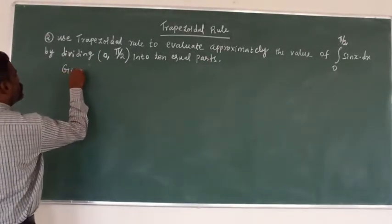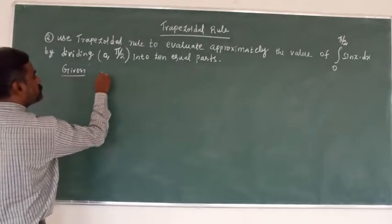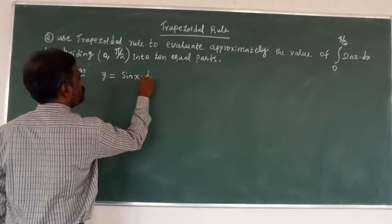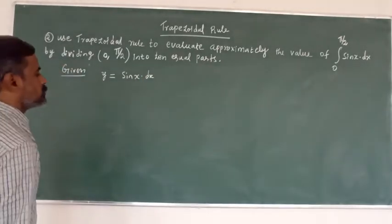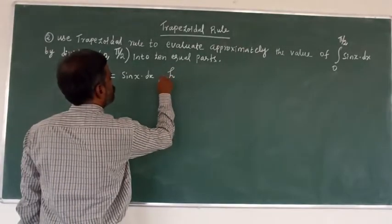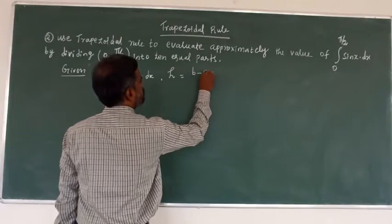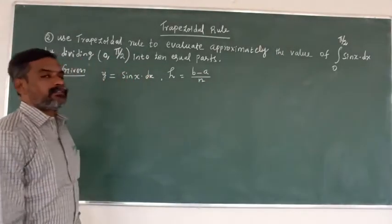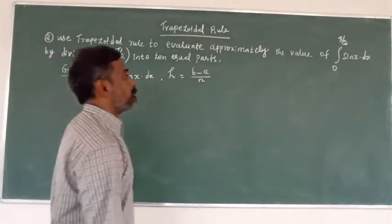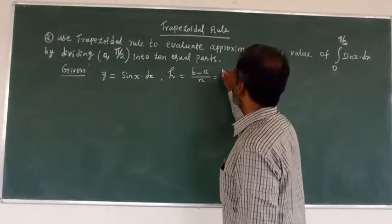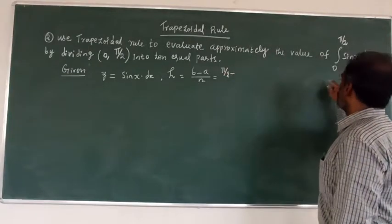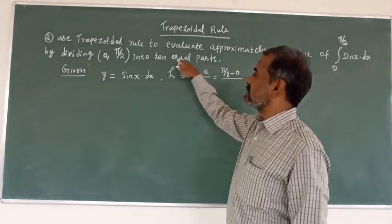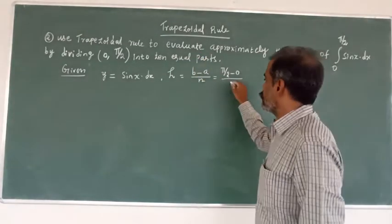We are given y equal to sin(x) dx. First, we have to find out the h value. h is equal to the upper limit minus the lower limit, divided by the number of intervals. Here, the upper limit is π/2, lower limit is 0, and the number of intervals is 10 for 10 equal parts.